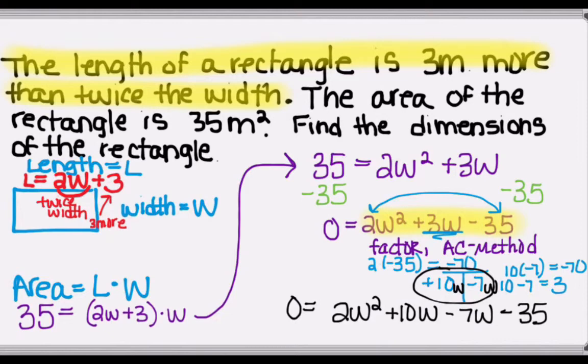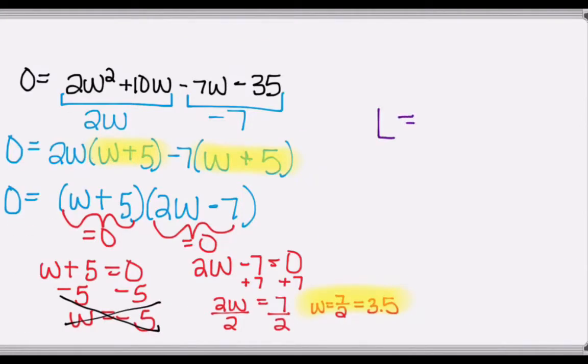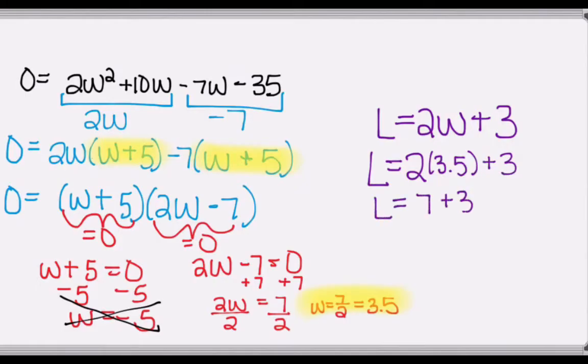If we go back to our previous slide here, so we can actually plug in 3.5 into that expression to find length. So using length is equal to 2W plus 3. Plugging in the 3.5, we have length is equal to 2 times 3.5 plus 3. So length is equal to 7 plus 3, so length is equal to 10 meters.